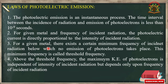The third law states that for a given metal, there exists a certain minimum frequency of incident radiation below which no emission of photoelectrons takes place — this minimum frequency is called the threshold frequency. The fourth law states that above the threshold frequency, the maximum kinetic energy of photoelectrons is independent of the intensity of incident radiation, but depends only on the frequency of incident radiation.